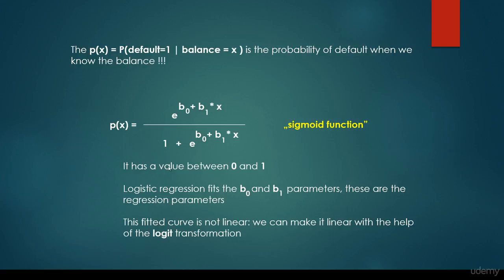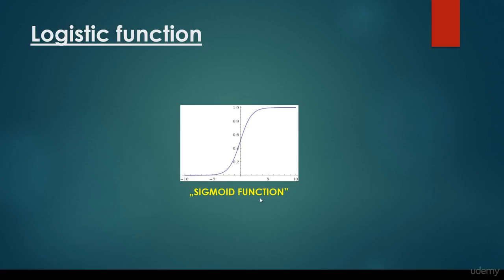Why is it good? Because it has a value between 0 and 1. Logistic regression fits the B₀ and B₁ parameters — these are the regression parameters, as we have seen for linear regression. For linear regression we had the A and B parameters that had to be found. So this fitted curve is not linear; we can make it linear with the help of the logit transformation. As you can see, if the x value is very very big, the value of the logistic function will be 1. And if the x value is very very small, then the value will be 0, so it's going to be in the range 0 and 1. The value is 0.5 when x is equal to 0. This is the sigmoid function, or the logistic function.